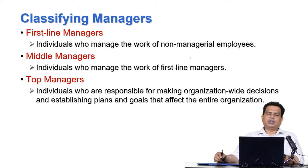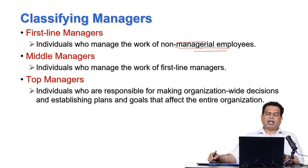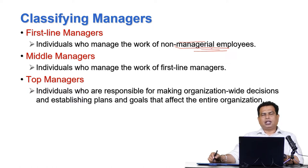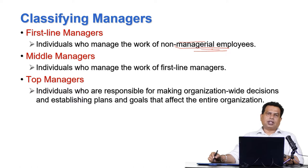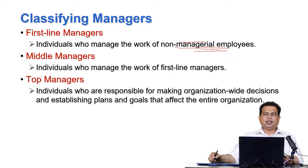First line managers are the individuals who manage the work of non-managerial employees — basically the workers who are skilled, semi-skilled, or unskilled. Middle level managers are the individuals who manage the work of the first line managers. They are the supervisors or superiors of the first line managers, giving them tasks and objectives to fulfill, and also monitoring what first line managers are doing. If there are any variations from the targeted plans, those variations have to be addressed.